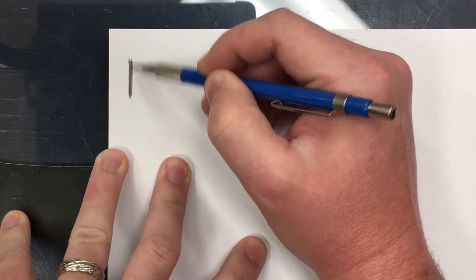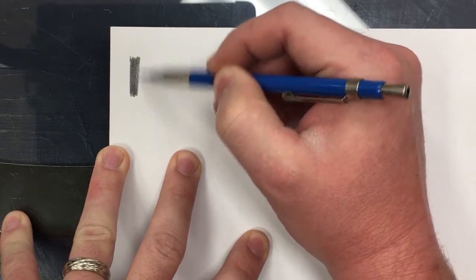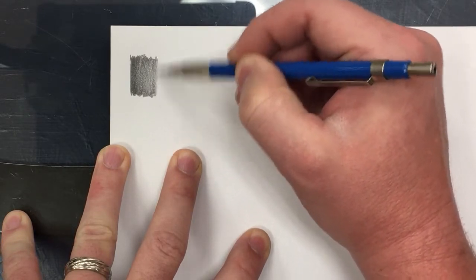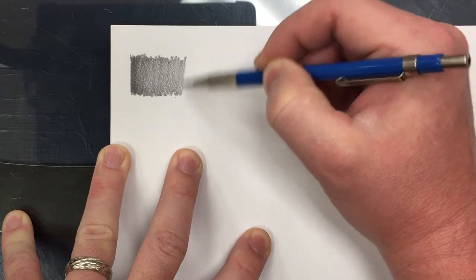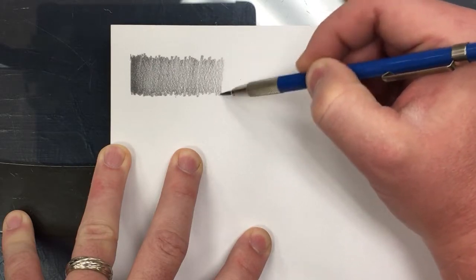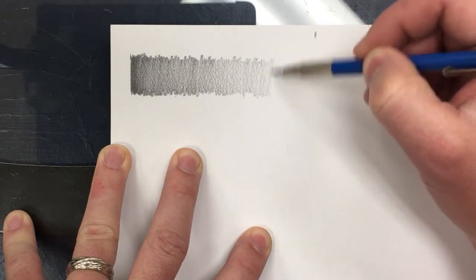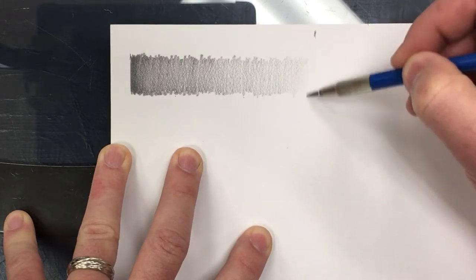Start with 2B. You're going to build that up as dark as the pencil is designed to go. I'm not worried about the edges - if they're a little jagged, that's okay. I'm going to start to lessen the pressure and slow down.